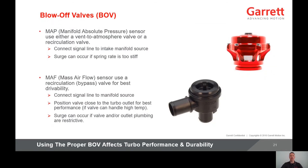There are two types of blow-off valves: vent to atmosphere and recirculation, also known as a bypass valve. The vent to atmosphere blow-off valve is used on engines with a MAP sensor. For proper function, connect the signal line to an intake manifold source. Surge can occur if the spring is too stiff. The spring is usually replaceable, so if surge is occurring, a softer spring should be installed.